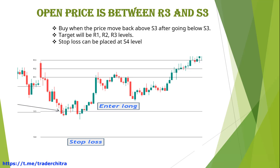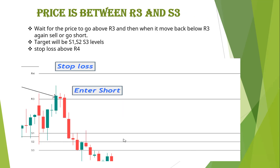In this practical example, the price came and touched the S3 level, then tried to go below. Buyers pushed the price up and we got an inverted hammer candle — a candlestick pattern. After that we got a green candle. By when the price moves back above S3 after going below S3, we can enter long above that green candle. The first target is R1, second target is R2, third target is R3. Stop loss is placed at the S4 level.